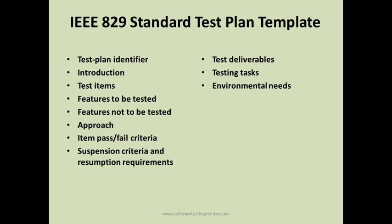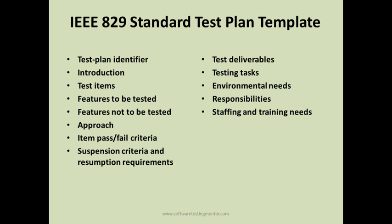After environmental needs, you define responsibilities — who will do what activities in the test cycle. Then staffing and training needs: for a large project requiring a team of 20 testers, you document the required staff size and any specialized training needs. For example, if the software requires specific automation skills, you would note that training on a particular automation tool needs to be acquired.